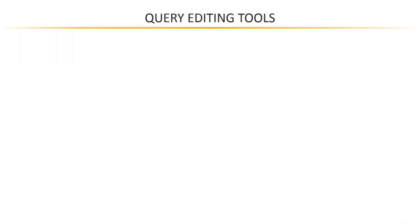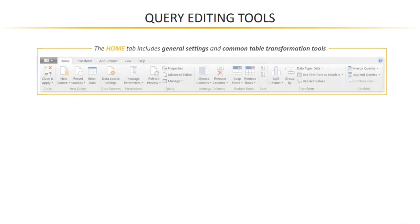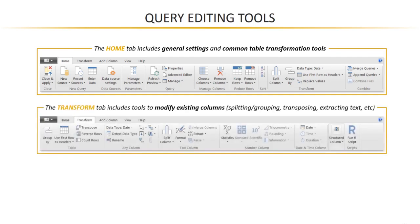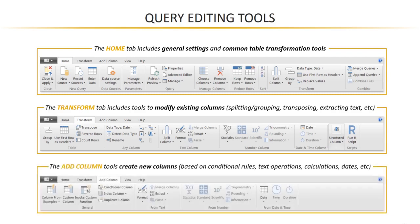Moving into the query editing tools, there are three primary tabs. First, the Home tab includes general settings, data source settings, parameters, table properties, and some of the most common table transformation tools. The Transform tab includes additional tools to modify existing columns — you can split or group columns, transpose your table, extract text, and more. Finally, the Add Column tab creates brand new columns in your table, defined by conditional rules, text operations, calculations, date operators, and more.